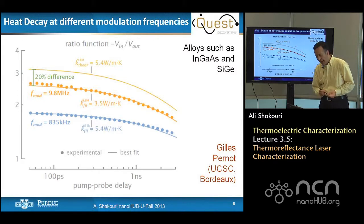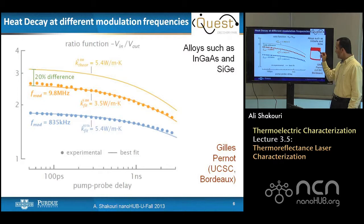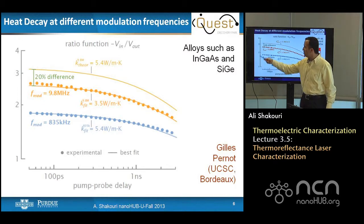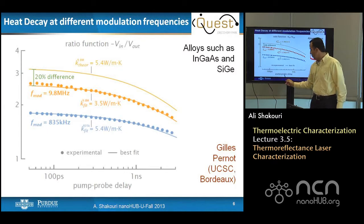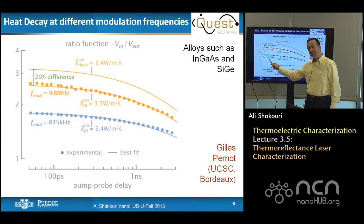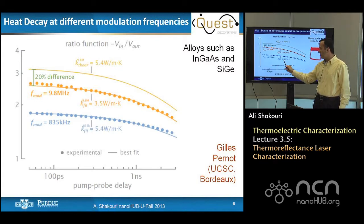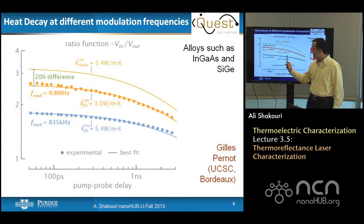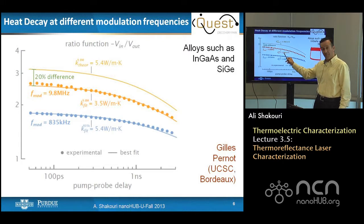What we have is basically a transducer sitting on a substrate, so what we are measuring is how the heat from this transducer goes down — we are measuring the property of the substrate but also the interface. Here is a typical ratio curve — in-phase over out-of-phase in the lock-in — versus pump-probe delay, typically going to a couple of nanoseconds. At a modulation frequency of 835 kHz, you can get a good fit with thermoconductivity of about 5.4 W/m·K. The same film, same configuration — all you change is the modulation frequency — and the extracted thermoconductivity is 3.5, significantly lower.